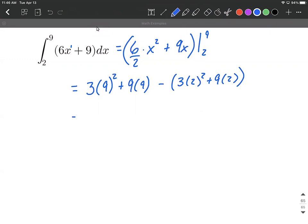Let's go ahead and evaluate this. So we're thinking 3 times 81, 9 squared is going to be 81, is going to be 243 plus 81 minus, and I'm going to do this computation on the inside here just to show my work. So we have 3 times 2 squared is 4, which makes 12, plus 9 times 2 makes 18.